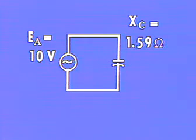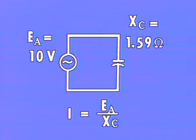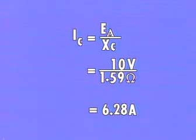We again find the current by dividing the applied voltage by the capacitive reactance of the circuit. 10 volts divided by 1.59 ohms equals 6.28 amperes.